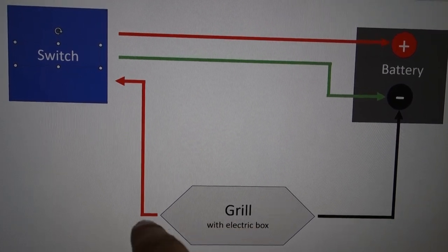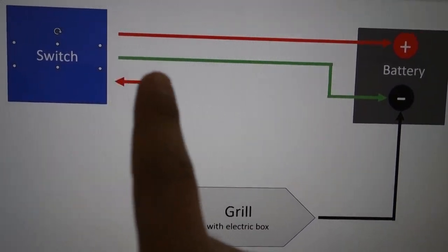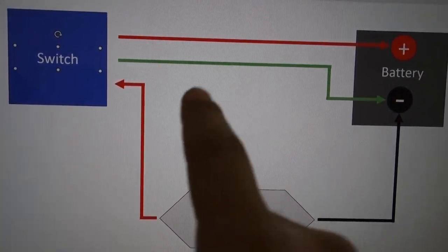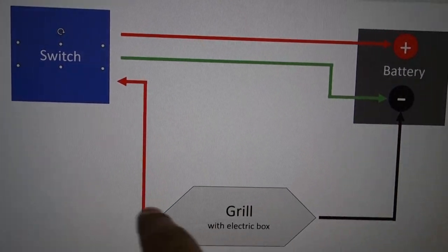From the white box, the grill lights come out to the switch. One of them goes, and then one goes to the negative. Get a new wire and that goes straight to the battery as a positive, and that completes the circuit.